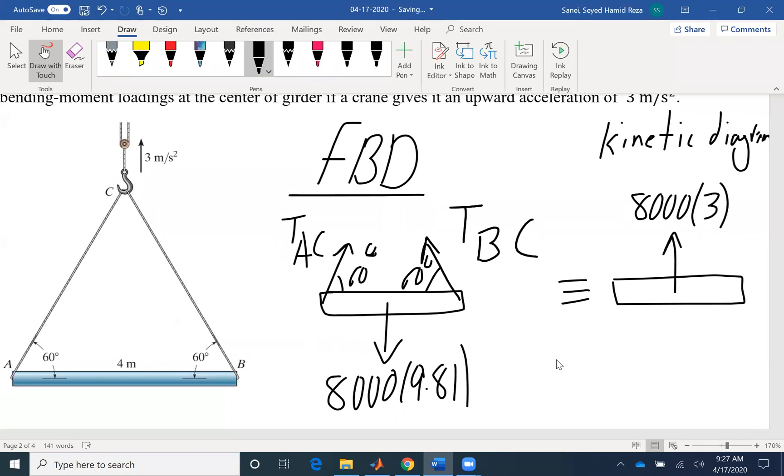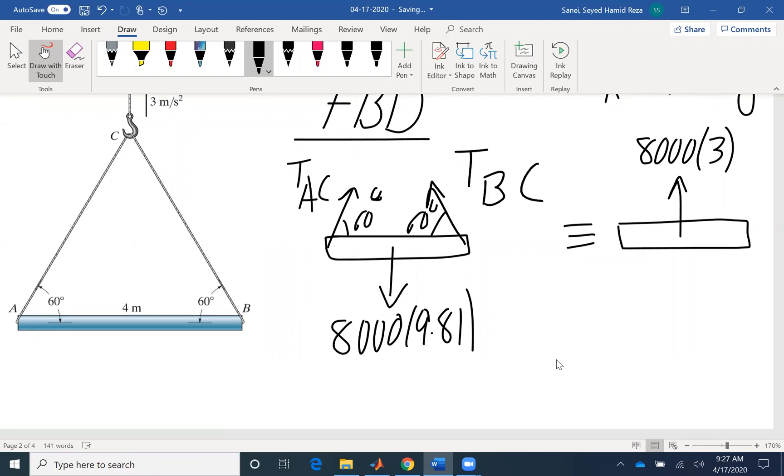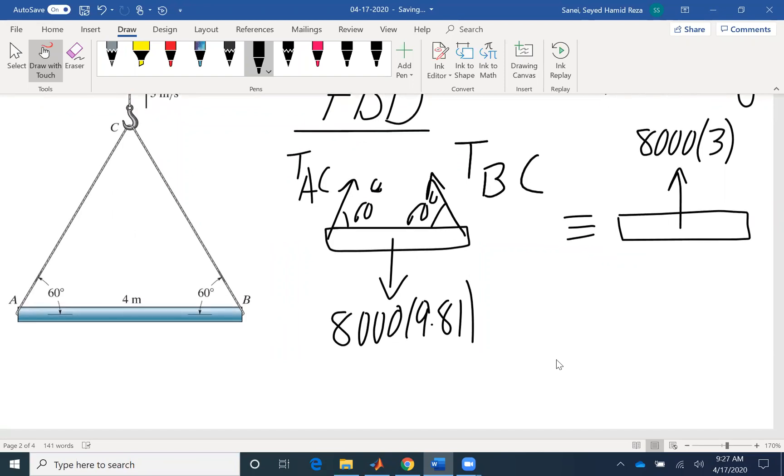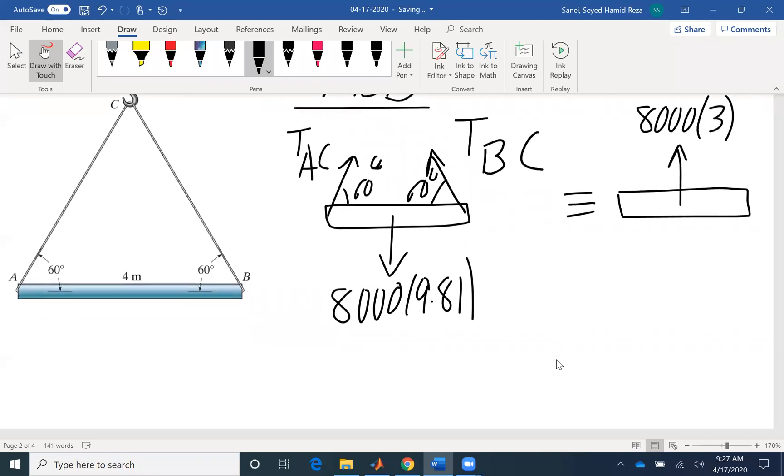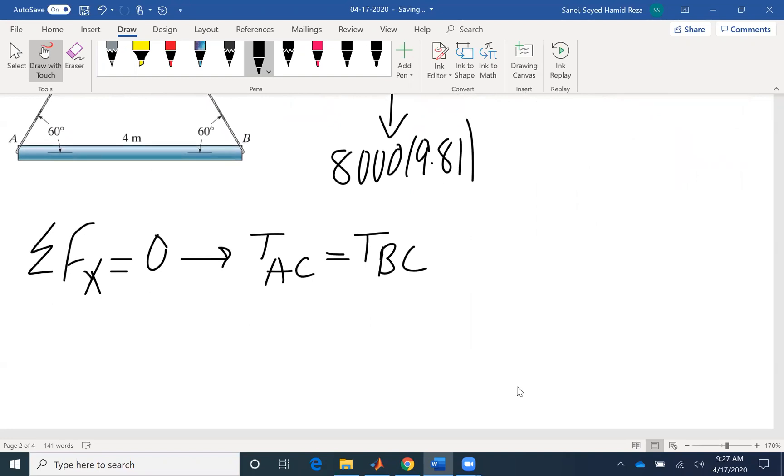I can easily find the tension in the ropes. I can write summation of forces in X. That means the two are going to have the same value. We also could determine that using symmetry. Summation of forces in X is zero, that means TAC equals TBC. Also, summation of forces in Y here is not equal to zero.